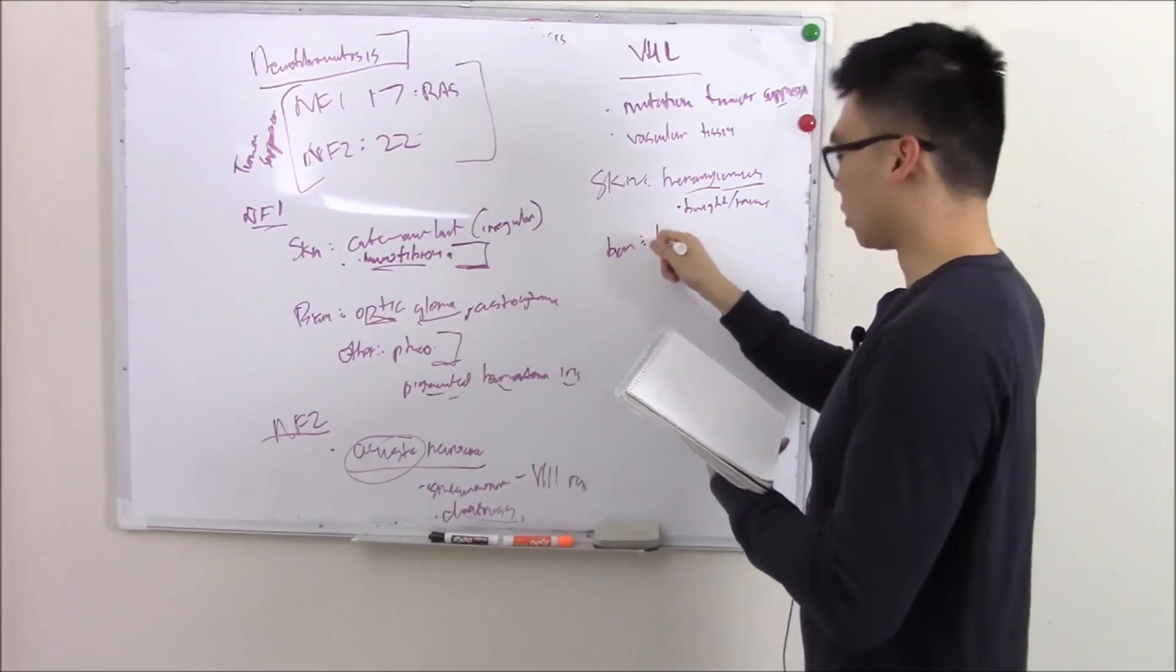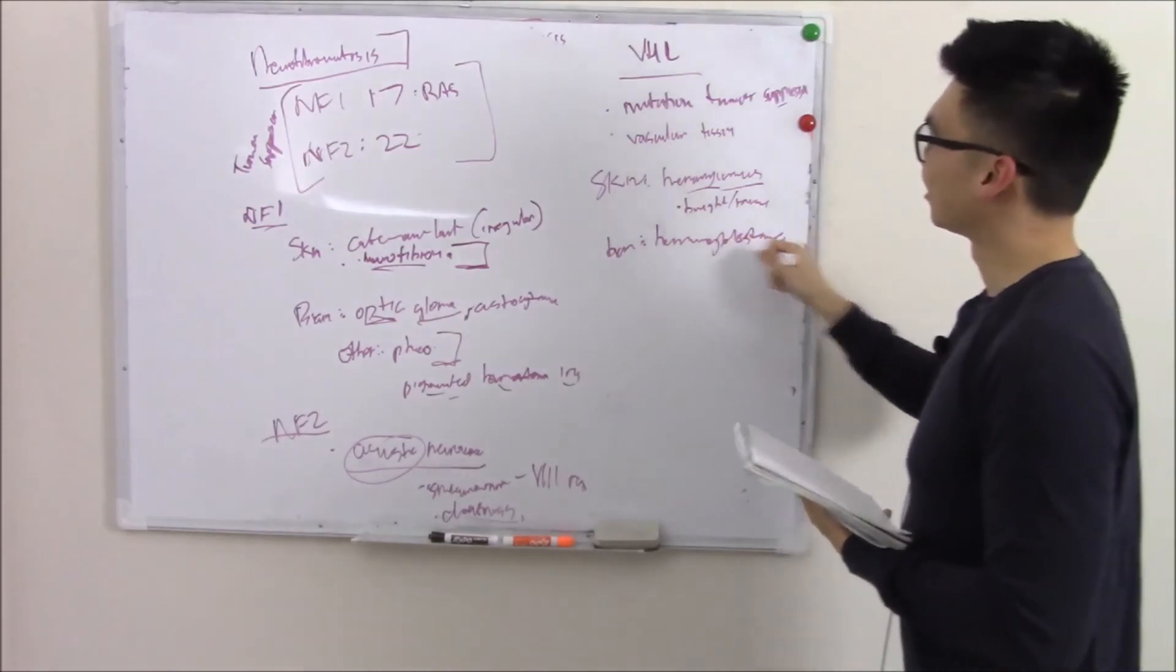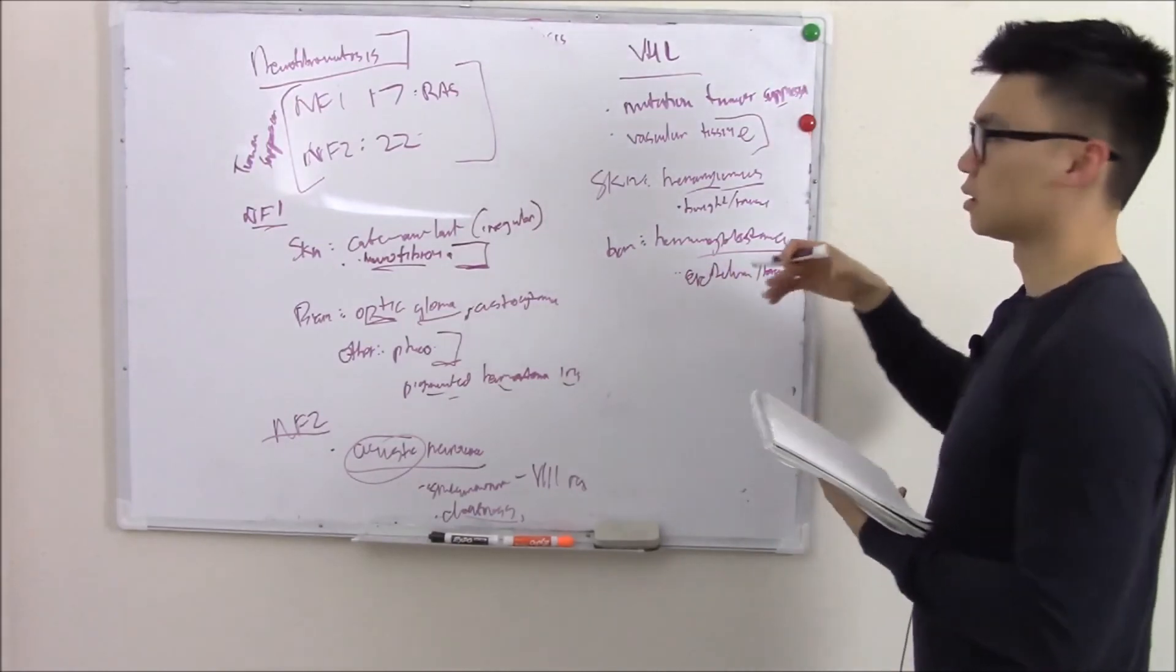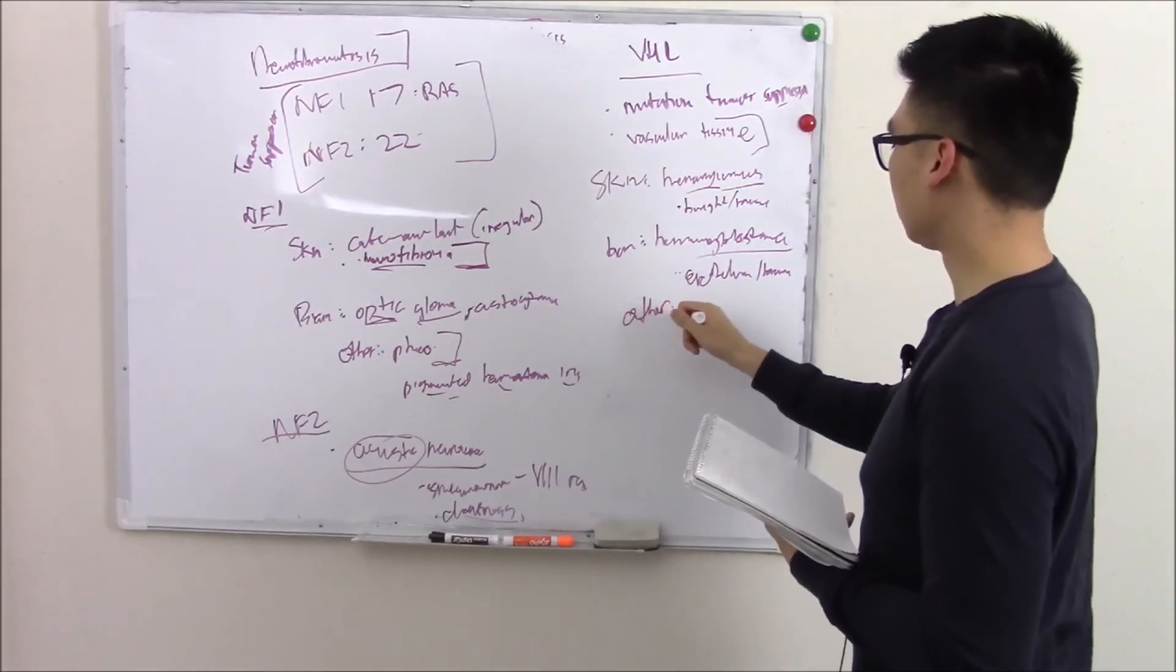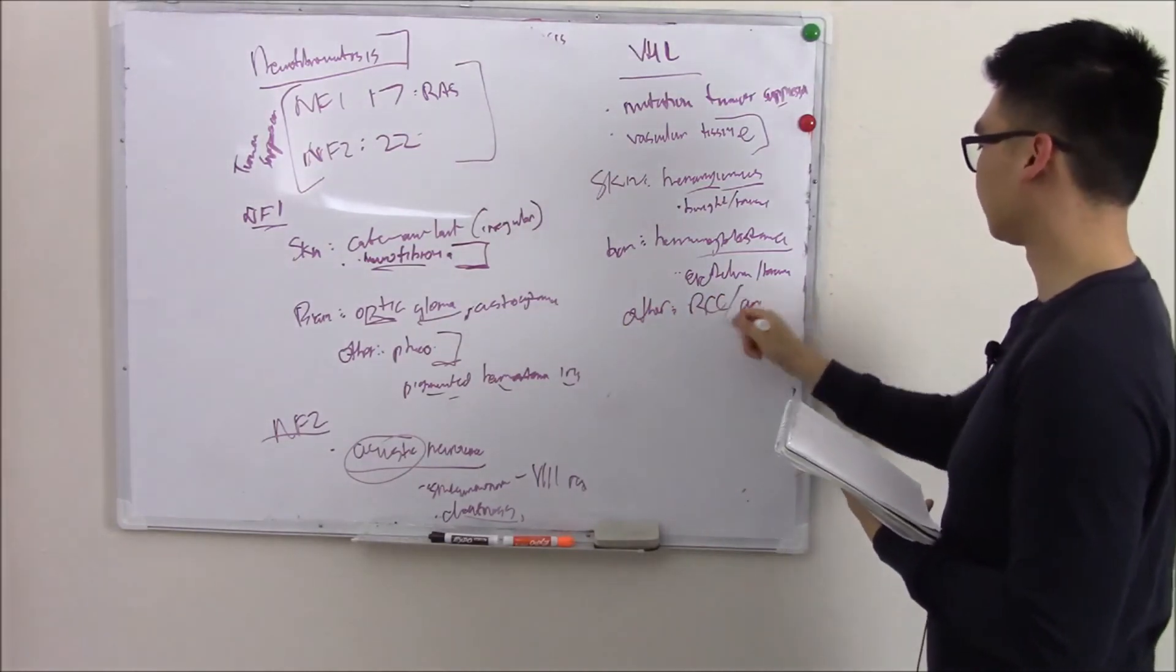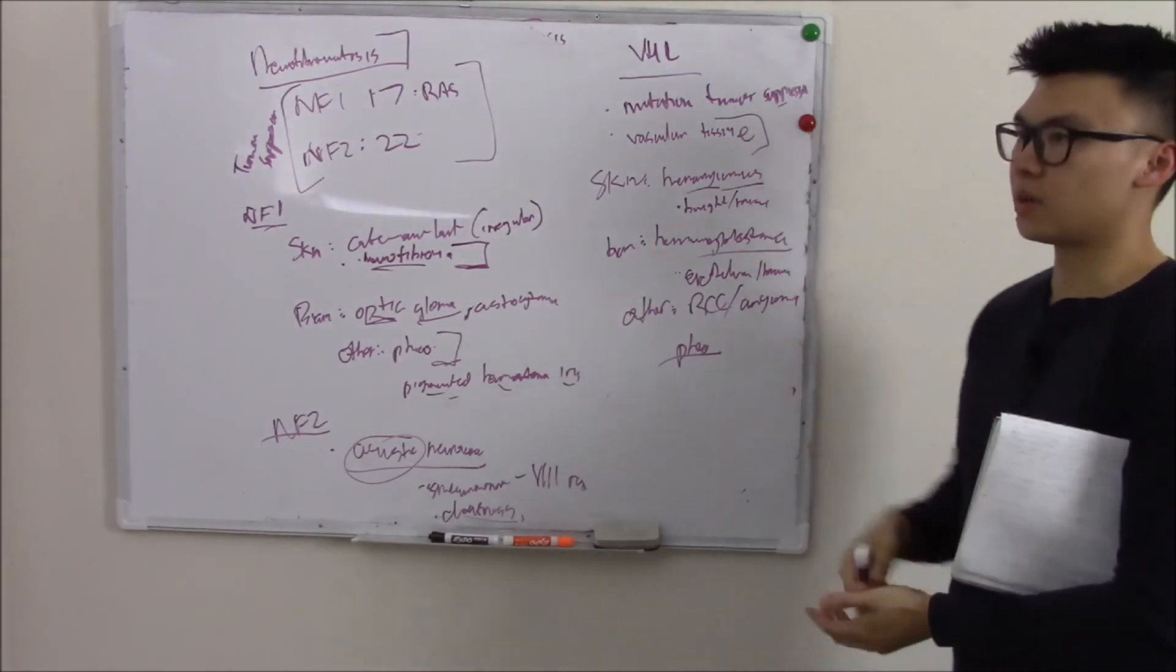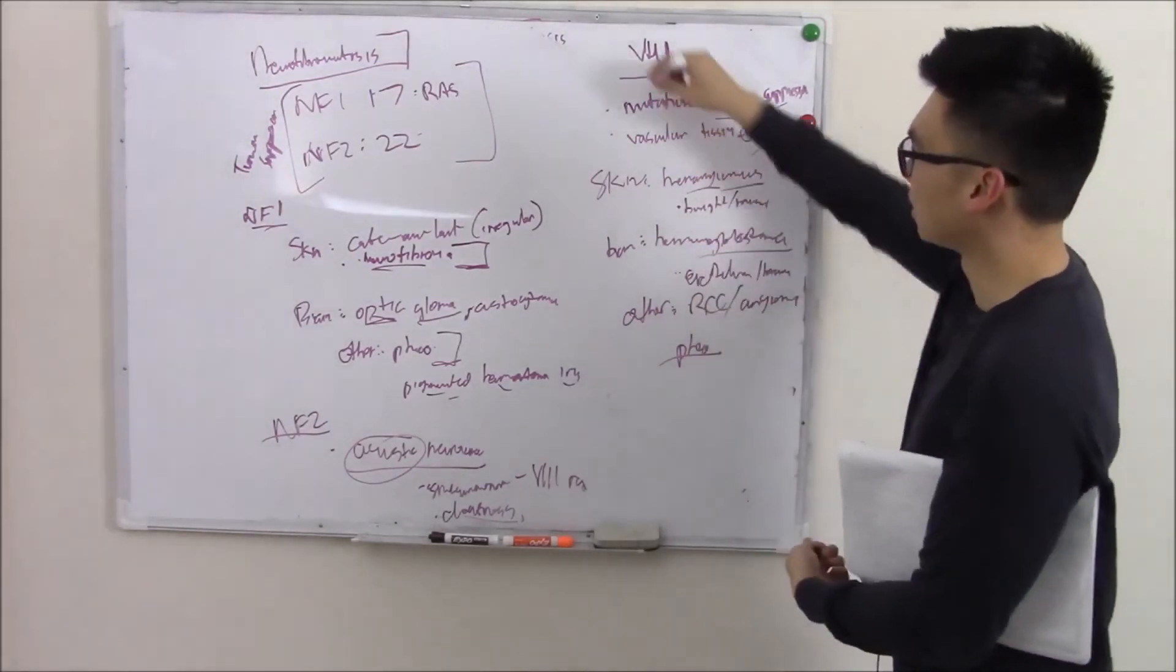What's the brain manifestation? You get hemangioblastomas. This is all vascular tissue. Usually it involves your cerebellum, brainstem, your spine, that whole area back here. Other manifestations: you can have renal cell carcinoma or renal angiomas, and you can have pheochromocytomas. Pause the video and tell me everything you know about renal cell carcinoma, then synthesize it into a step-like question using all these variables.